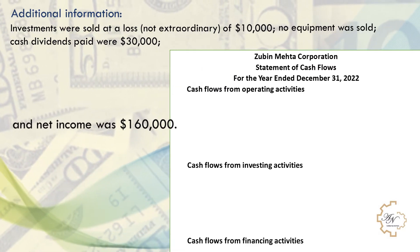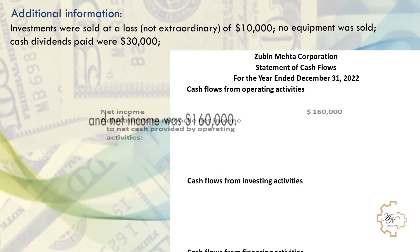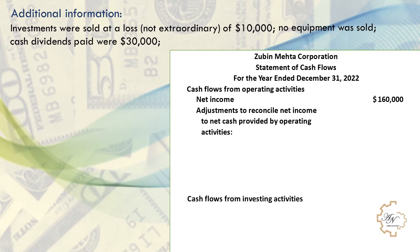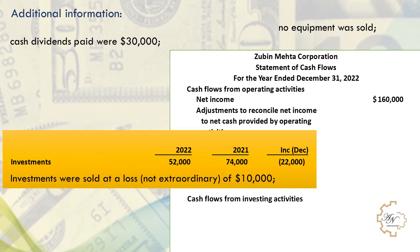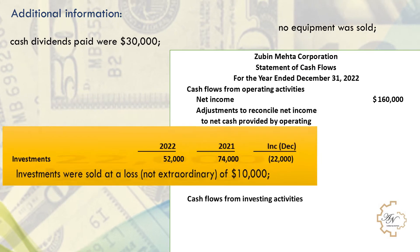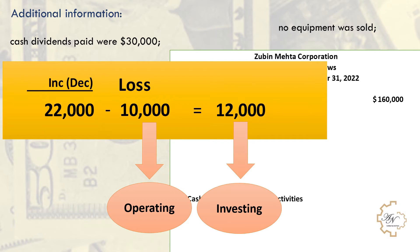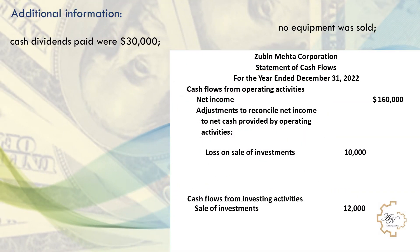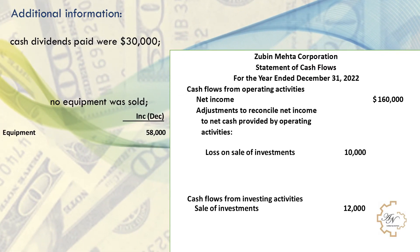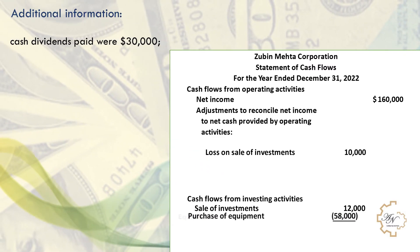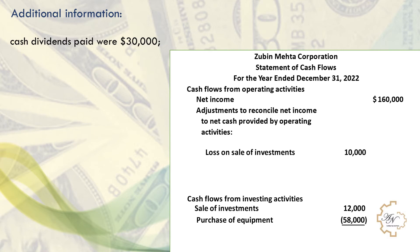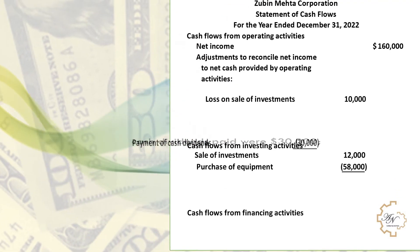Begin with net income of $160,000 as the first item. Then write adjustments to reconcile net income to net cash provided by operating activities. From the additional information, investments were sold at a loss of $10,000. Looking at the comparative balance sheet, investments decreased by $22,000 — this is divided into a $10,000 loss added in operating activities and $12,000 added to investing activities as sale of investments. The loss is added to net income, and $12,000 is added to investing activities. No equipment was sold; equipment increased, so it is deducted from investing activities.